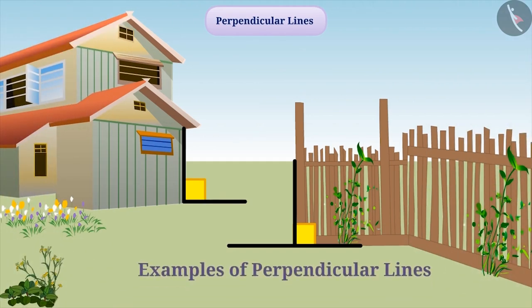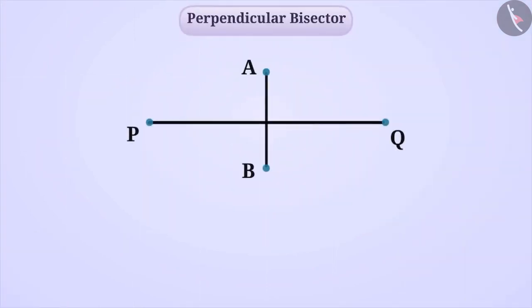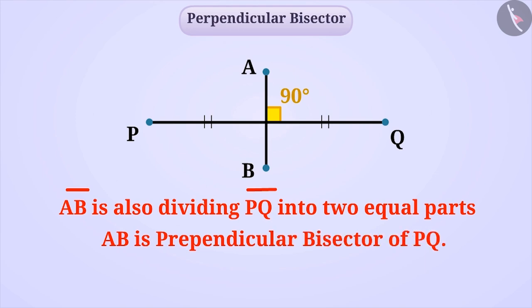Some more examples of this are as follows. Consider the line segment AB is perpendicular to line segment PQ and along with this, it is dividing line segment into two equal parts. In such situations, we say that line segment AB is perpendicular bisector of the line segment PQ.